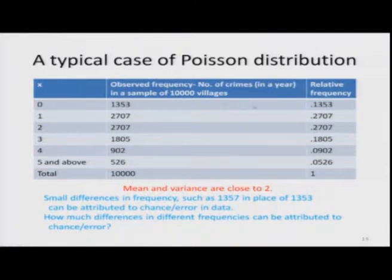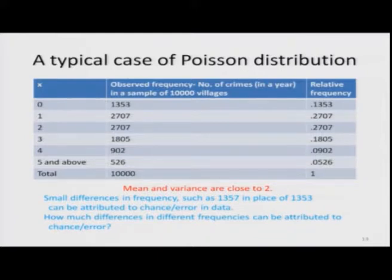A typical case: assume there is an observed frequency distribution of number of crimes in a year in a sample of 10,000 villages. A sociologist surveys 10,000 villages to find the frequency distribution of number of crimes. The number of crimes may be 0, 1, 2, 3, 4, 5 and above, and the observed frequencies are given accordingly.